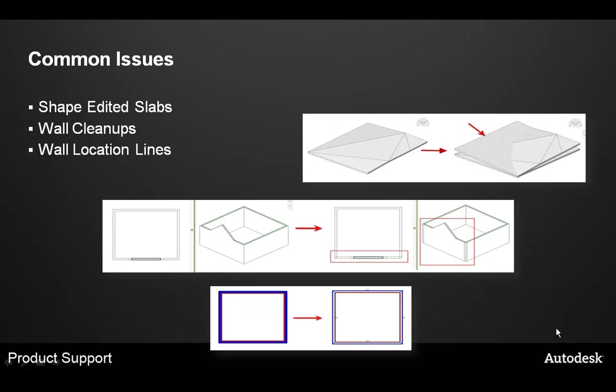There are some common issues when using copy monitor with Revit Structure. Shape-edited slabs will copy as flat — users should try to use the slope arrow tool to slope slabs where possible, or use a separate slab for each slope. Walls will not clean up when copy monitored if profile sketches have been applied to them. To work around this, eliminate profile sketches where possible, use masking regions to hide the plan line work at the cleanup, or try using the Edit Wall Joins tool — though this may not work in every scenario.